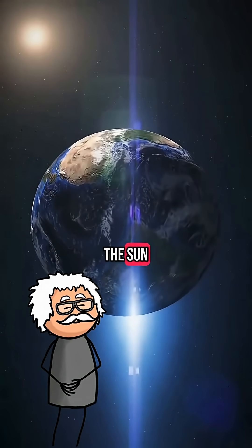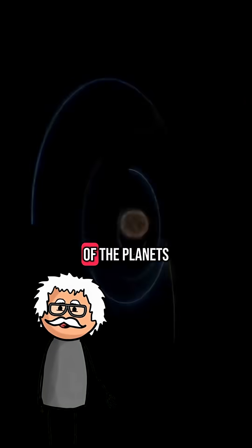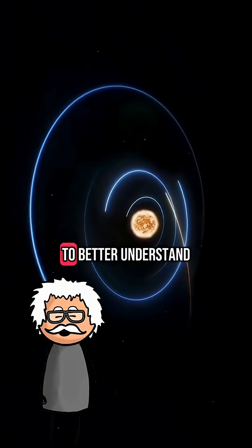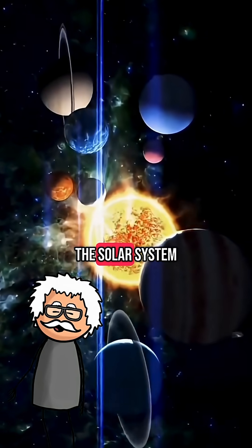Our planet orbits the Sun, and wherever the Sun goes, we go, just like the rest of the planets that orbit it. To better understand this, the Sun is not stationary. It travels through the Milky Way along with all the planets in the solar system.